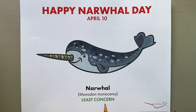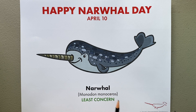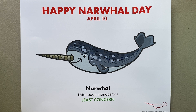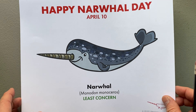The narwhal lists as 'least concern' on the IUCN's Red List of Threatened Species. Least concern for extinction is a very good status and we're happy to see that with the narwhal. Now that we know what the animal looks like and we've gotten a little familiar with some of the details, we're going to go ahead and start drawing.